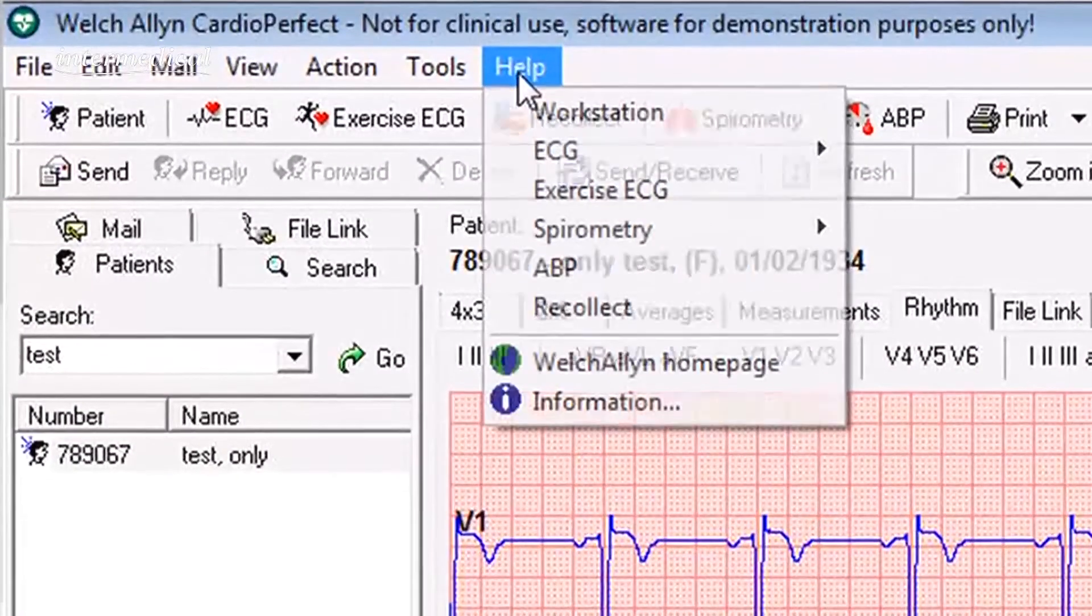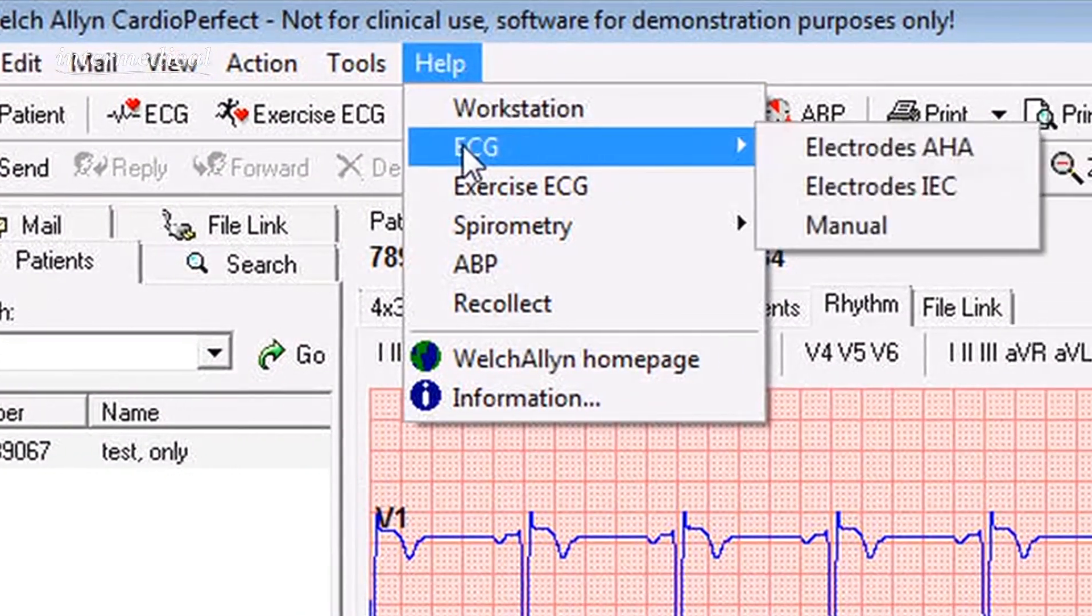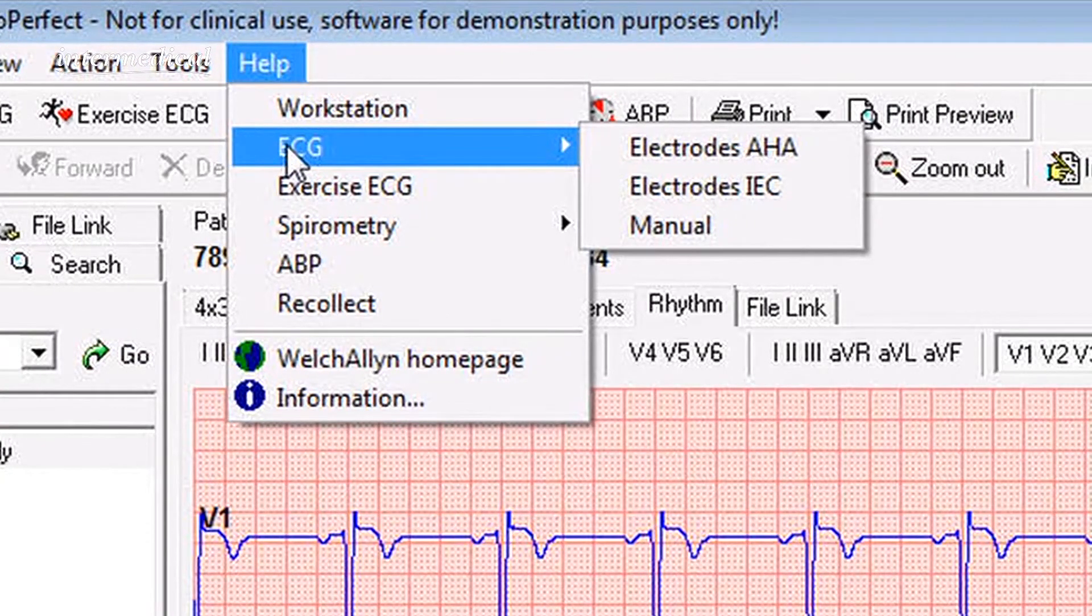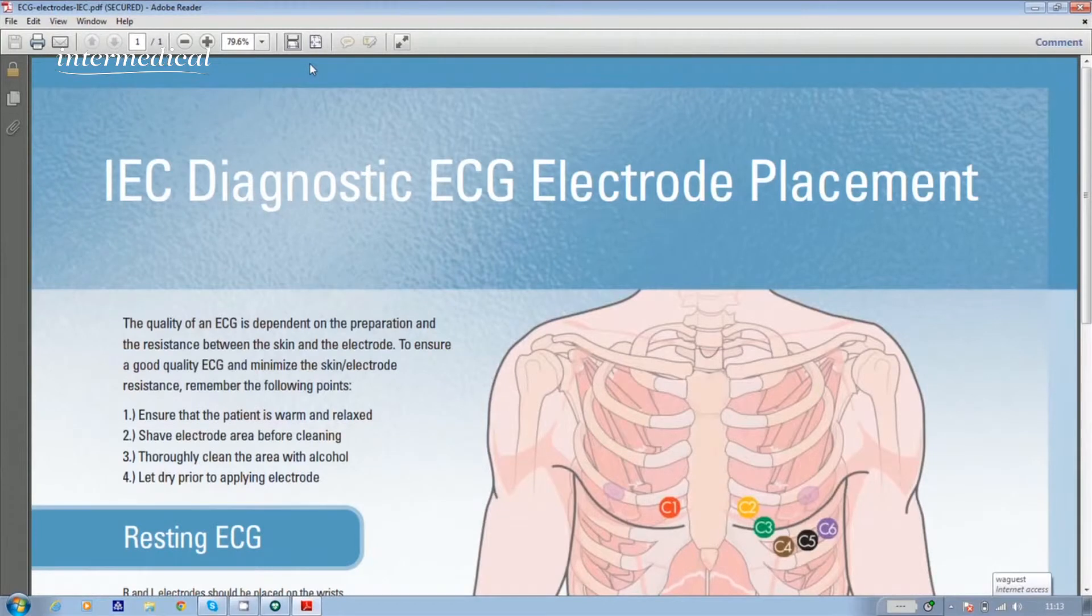And from the drop down menu, select ECG followed by electrodes IEC and the graphic will appear on screen.